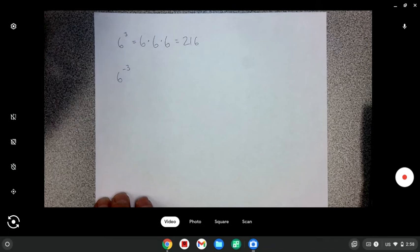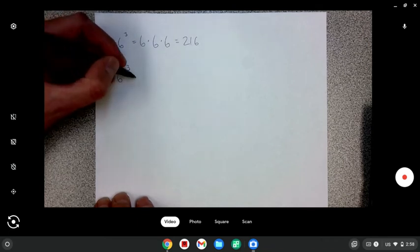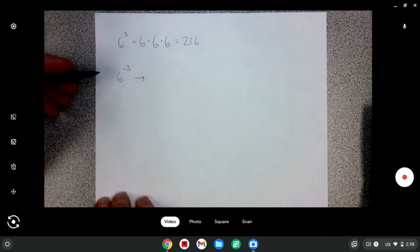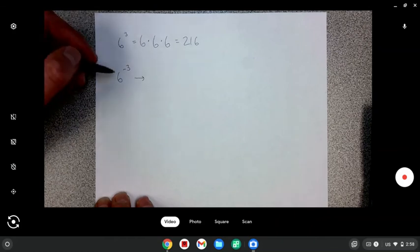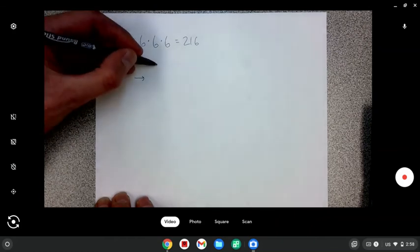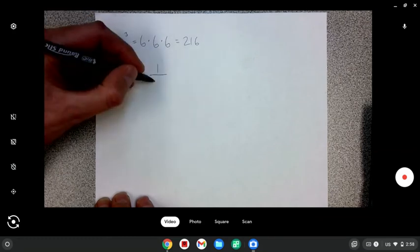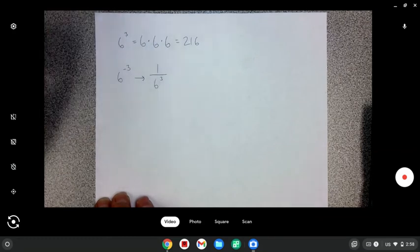The way we can deal with this negative exponent is we're going to change this into a fraction. What I'm going to do is I'm going to say, okay, I've got a negative exponent. So I'm going to write this as one over six to the third power.